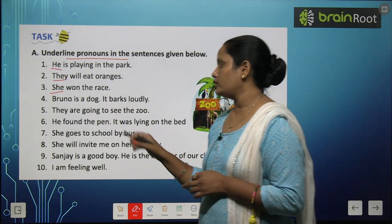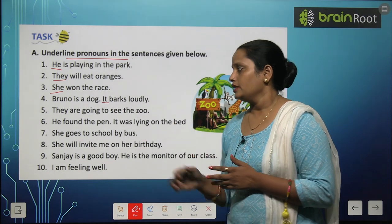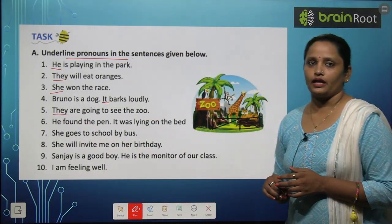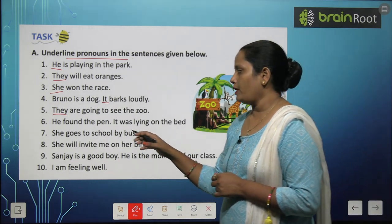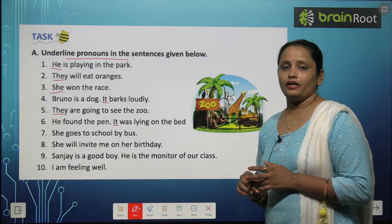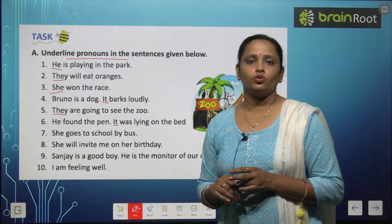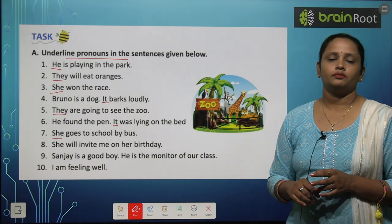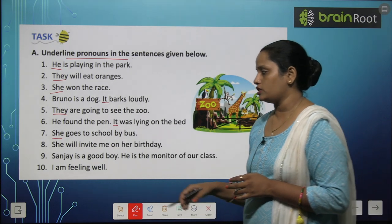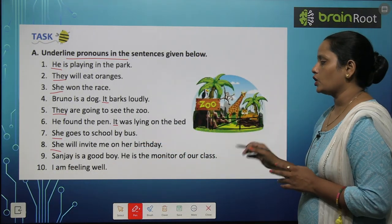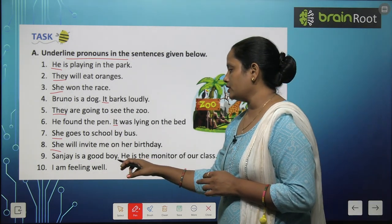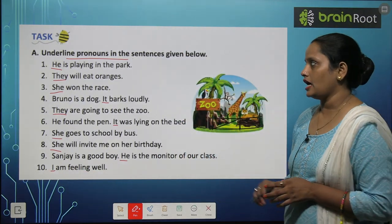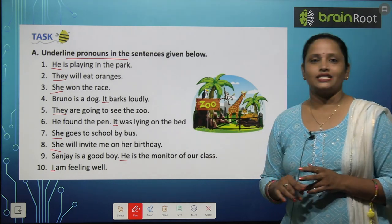Next: It barks loudly — it. So for Bruno we used 'it'. They are going to see the zoo — they are going to the zoo. He found the pen. He found the pen. It was lying on the bed — it was on the bed. Who was on the bed? Pen. So for pen we are going to use 'it'. She goes to school by bus — she goes to school by bus. She will invite me on her birthday — she will invite me to her birthday. So 'she' is the pronoun here. Sanjay is a good boy. He is the monitor of our class — so again here, 'he'. I am feeling well — so here again, 'I'. I is the pronoun here. So these are the pronouns that we have underlined.